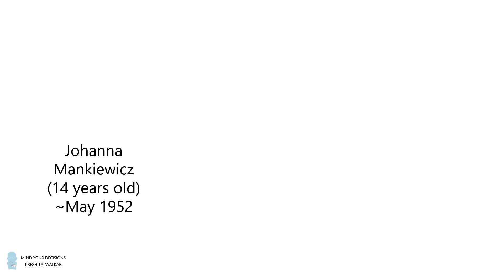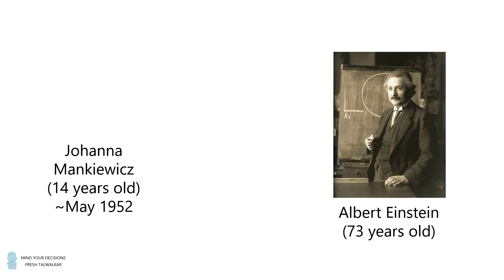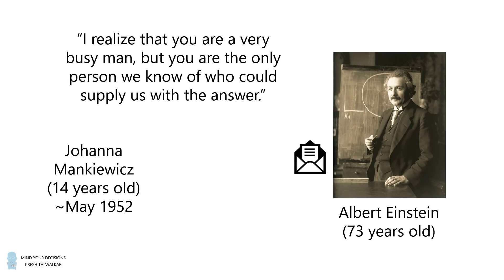Johanna decided she didn't know the answer, so who could she write to for help? She thought about a 73-year-old Albert Einstein. She wrote a letter with the problem, and she asked, I realize that you're a very busy man, but you are the only person we know of who could supply us with the answer.